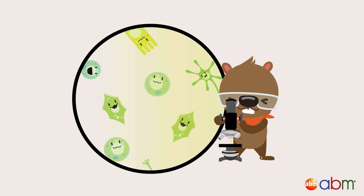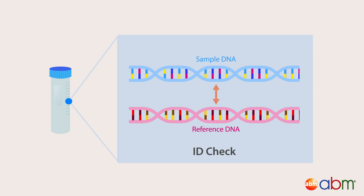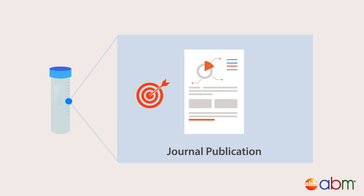Always check the cell morphology microscopically to ensure your cells look healthy and as expected. Lastly, perform an STR profile to make sure there was neither cell contamination nor population mixing. This will also check your cell line's ID by verifying the DNA short tandem repeats to a standard — a check that is becoming an increasingly common requirement for publishing your research in journals, ensuring your results are accurate and reproducible.